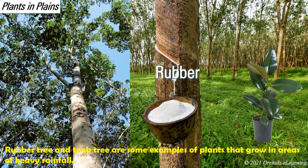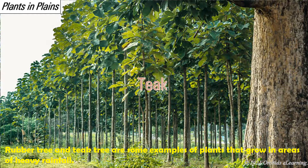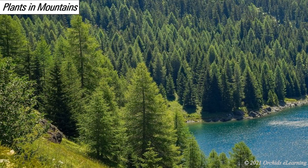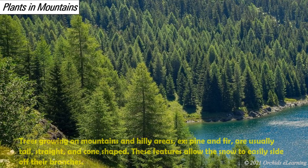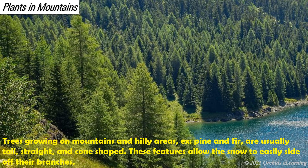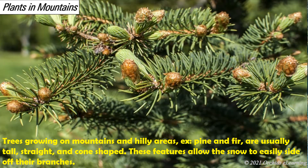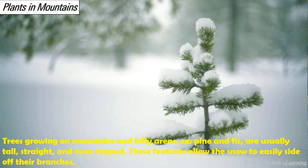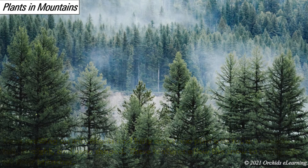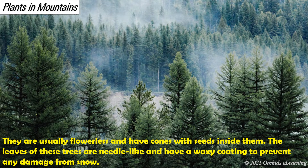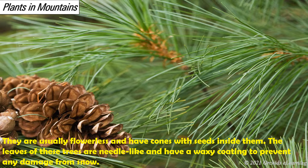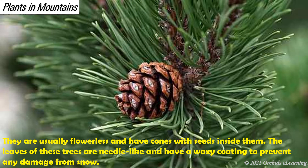Rubber trees and teak trees are some examples of plants that grow in areas of heavy rainfall. Plants on mountains: trees growing on mountains and hilly areas, such as pine and fir, are usually tall, straight, and cone-shaped. These features allow snow to easily slide off their branches. They are usually flowerless and have cones with seeds inside them. The leaves of these trees are needle-like and have a waxy coating to prevent any damage from snow.